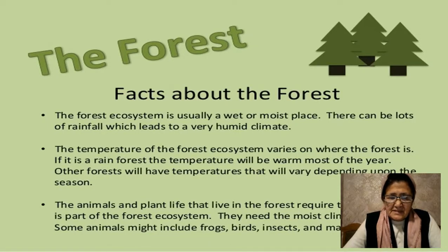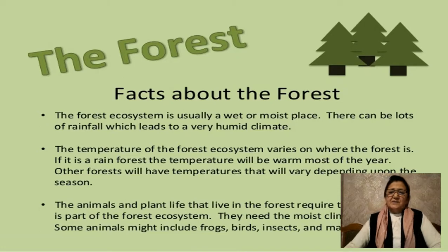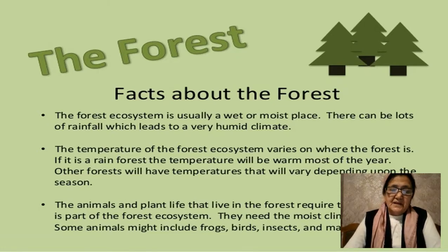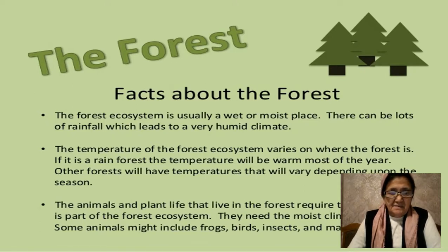Facts about the forest. The forest ecosystem is usually a wet or moist place. There can be lots of rainfall which leads to a very humid climate. The temperature of the forest ecosystem varies on where the forest is. If it is a rainforest, the temperature will be warm most of the year. Other forests will have temperatures that vary depending upon the season. The animals and plant life that live in the forest require the moist climate that is part of the forest ecosystem.